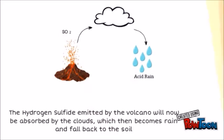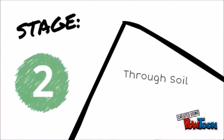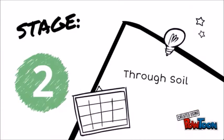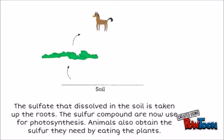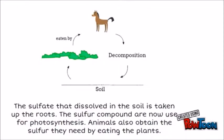Stage 2. The Sulphur compounds in the soil are now used for photosynthesis. Animals also gain the Sulphur they need by eating the plants.